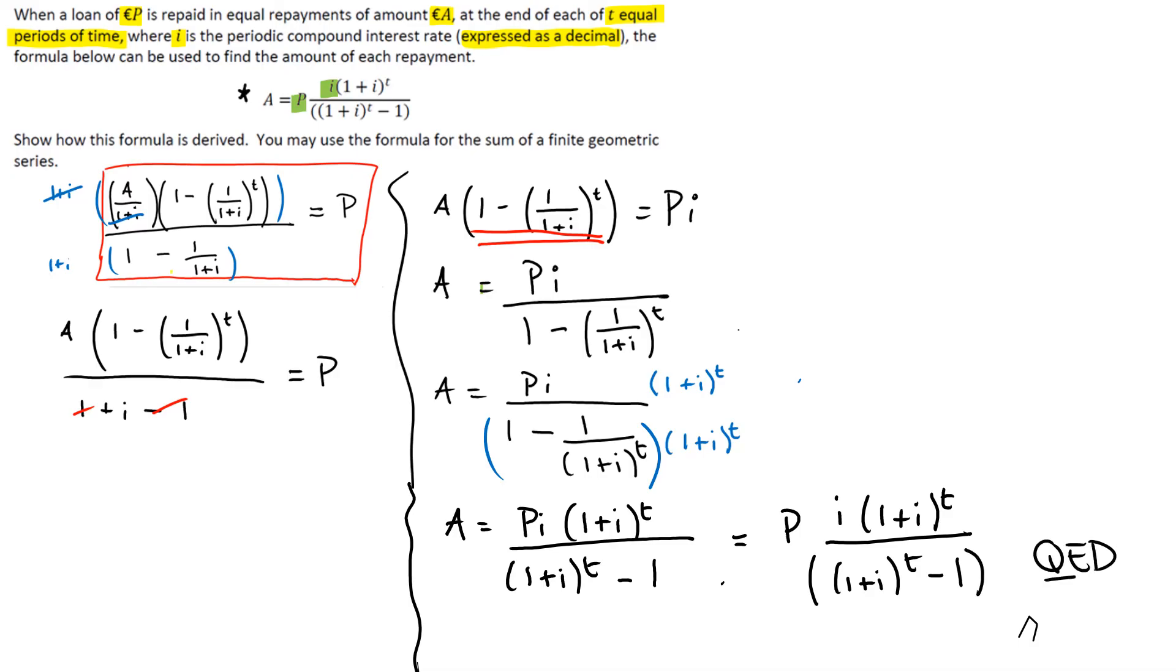Now there's lots of different ways you can work that algebra. I think that's the easiest way. Just remembering that when you multiply a fraction above and below the line by the same thing, you change the fact that you change how the fraction looks, but you don't change the actual value of the fraction. You're getting an equivalent fraction, so that's absolutely fine to do.